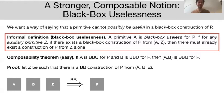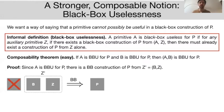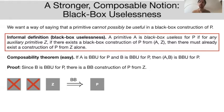Given this notion, there is a very easy composability theorem: if A is black box useless for P and B is also black box useless for P, then together A and B are also black box useless for P. The proof groups B and Z into a single primitive Z', applies the uselessness of A to get that Z' already implies P, and then applies the uselessness of B to get that Z alone implies P.